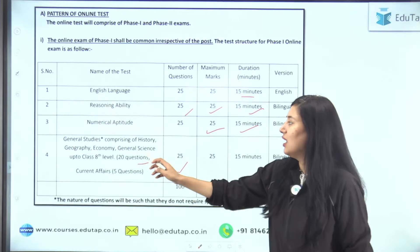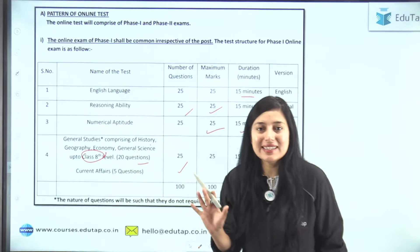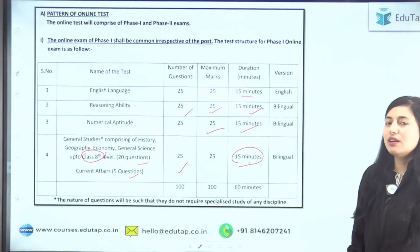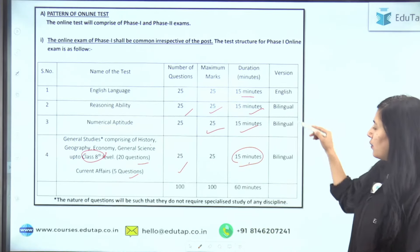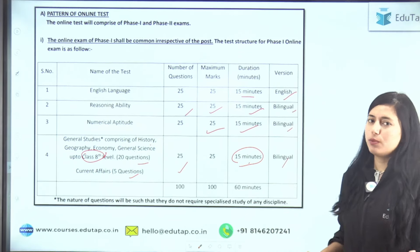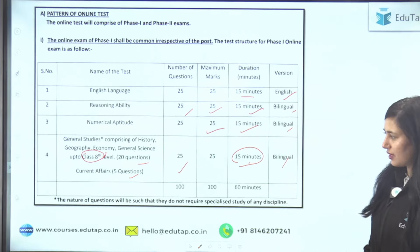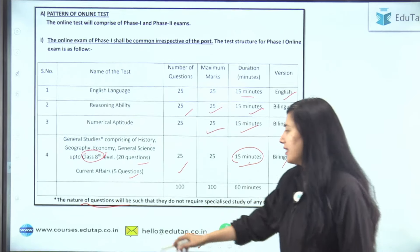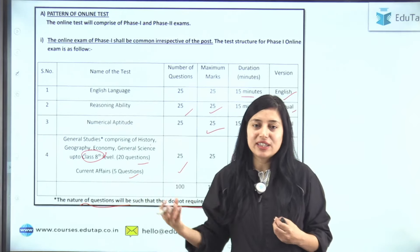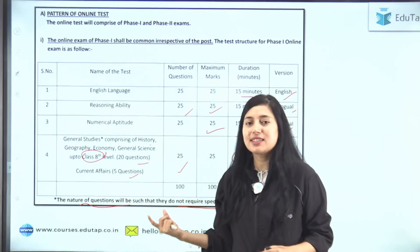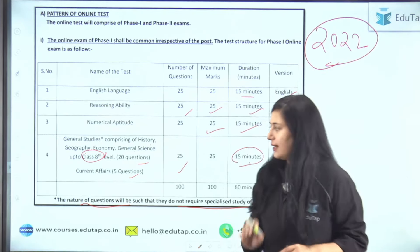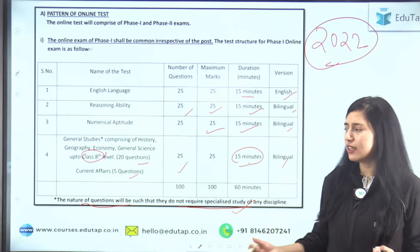GS and GA which is of 25 marks composite — GS mein aapka History, Geography, Economic GS aayega jo up to class 8 standard ki hoti hai, aur woha se 20 questions honge. Current Affairs se 5 questions honge. Time duration here is again 15 minutes. Language ki baat kare toh, English ko chhod ke you can give everything in Hindi also — bilingual is an option. English ka paper English mein hoga, rest bilingual opt kar sakte ho. FCI ne saf notification ke niche diya hai ki the nature of questions will be such that they do not require any specialized study for any discipline.